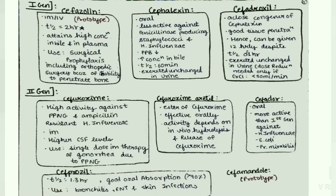Next, cefaclor. It is given orally, more active than the first generation against H. influenzae, E. coli, and Proteus mirabilis. Next, cefprozil — T-half is 1.3 hours, good oral absorption of more than 90%, used in bronchitis, ENT, and skin infections.